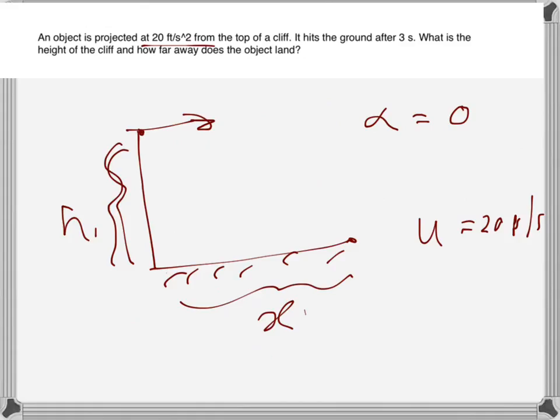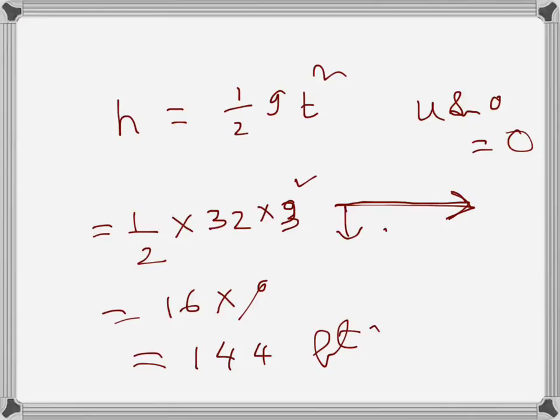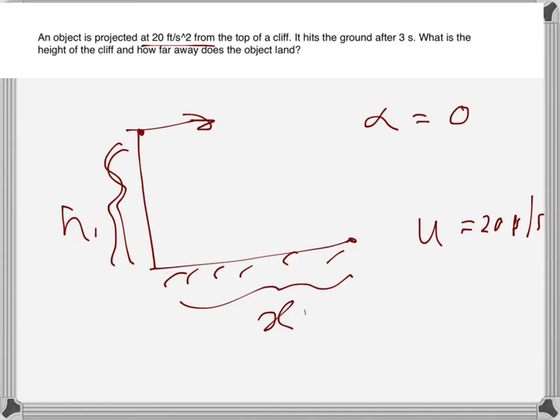And then we need to find how far away it lands. So that will be, let's say x. x will be u cos alpha, that's the horizontal component. But cos alpha, alpha is zero, so that's just u times t. So u is 20, so 20 times 3, so that will be 60 feet. So it will land 60 feet away from the cliff.